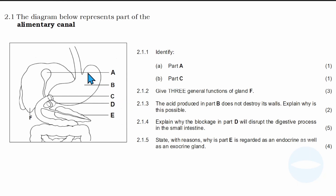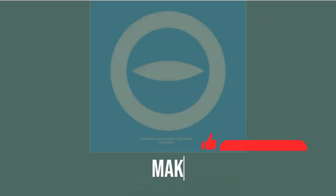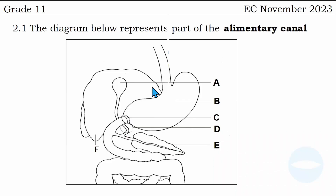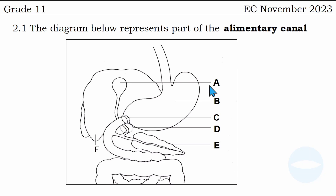So everything here is visible. You see this is the diagram and here are the questions. Without wasting more time, let's get to it. Here are the diagrams. Before I start to attempt the questions, let me give the labels. I will firstly give the labels, then after I will attempt the questions. So number A is the gallbladder.